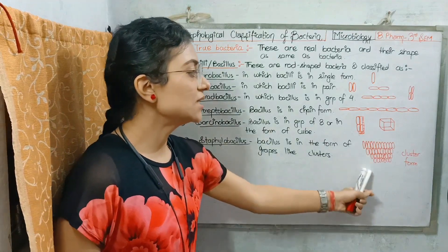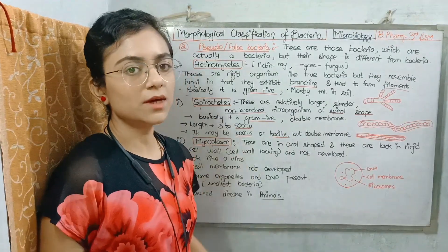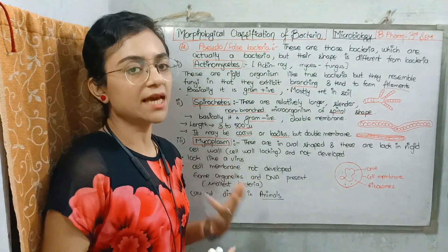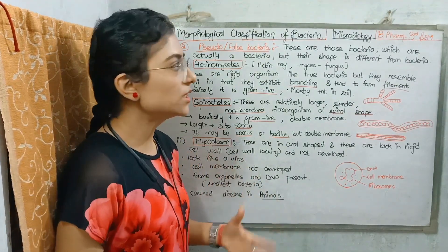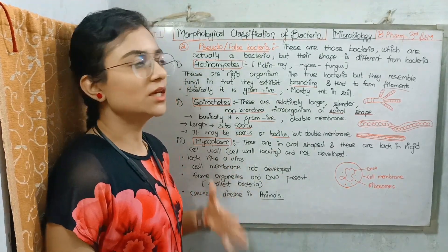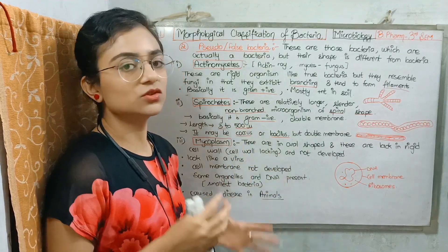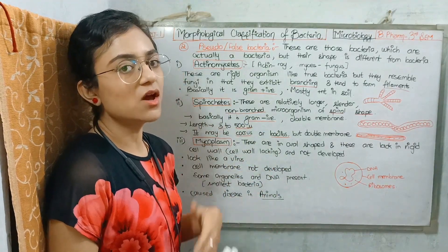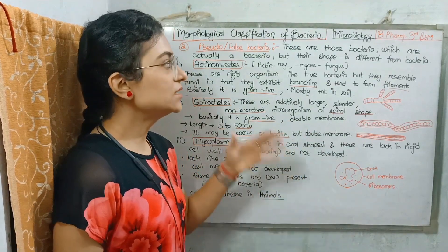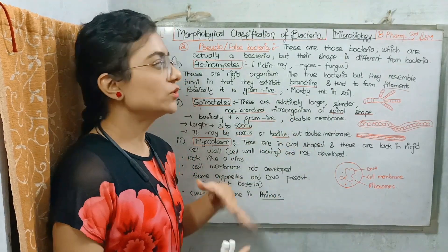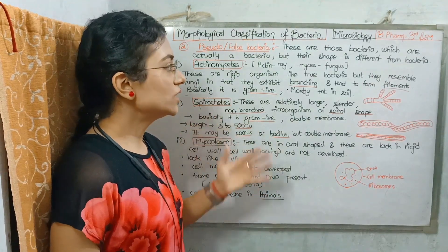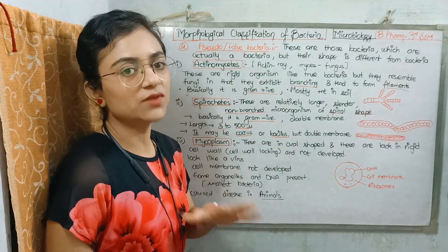So these are the two True Bacteria types we have studied. Now the second classification is False Bacteria or Pseudobacteria. These bacteria do not have the true shape of bacteria and are further classified into 5 types.